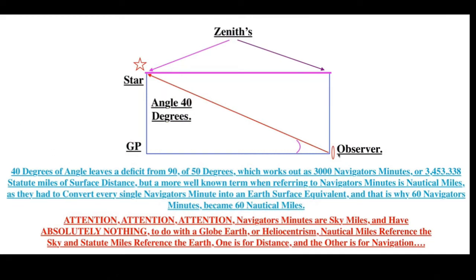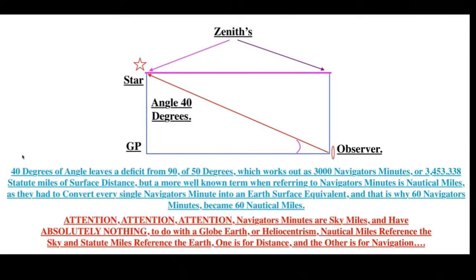Here is the GP of the star. Here is the observer. Here is a 40-degree angle, right, to the star, which is here. This is the observer's zenith here. This is the zenith of the GP of the star. They have a co-altitude. And you're going to read this out here. Then I'm going to show a very, very quick demonstration to show exactly what nautical miles are and why there are 60 nautical miles per degree. Nautical miles are globe miles. Okay. 40 degrees of angle leaves a deficit from 90 of 50 degrees, which works out as 3,000 navigators' minutes.